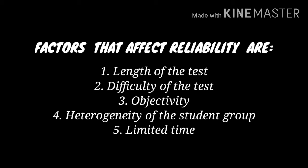Third, objectivity: objectivity eliminates the bias, opinions, and judgments of the person who checks the test. Reliability is greater when test scores are spread over a range of abilities, and measurement errors are smaller in a group that is more heterogeneous. Fifth, limited time: a test in which speed is a factor is more reliable than a test conducted over a longer time.